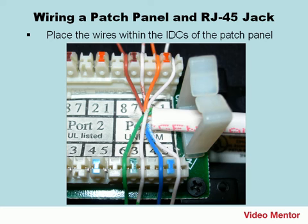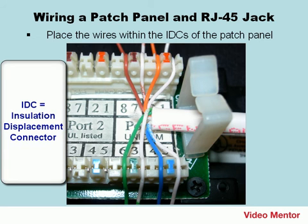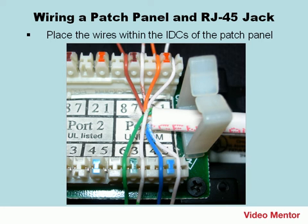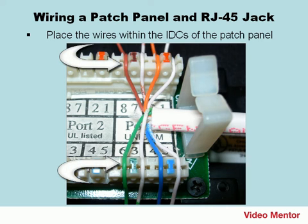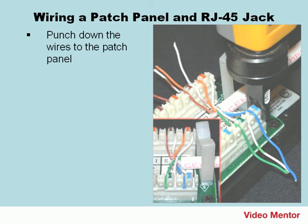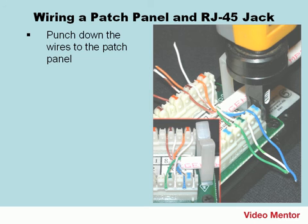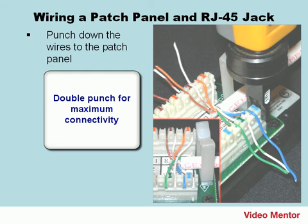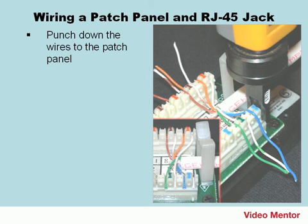Place the wires within the IDCs of the patch panel. Place each wire or pin in its color-coded 110 connector — these are known as insulation displacement connectors, or IDCs. Normally you would start with the white-blue and move on from there, but with the patch panel we're using, any color order will work. Temporarily place each wire with your fingers or a placing tool, and keep the PVC jacket as close to the connectors as possible. Then use the punch-down tool to connect the wires, making sure the cut side of the tool is facing away from the cable. Double punch each wire until all eight are done — the cut side of the punch-down tool should remove all the excess wiring beyond the 110 connector.